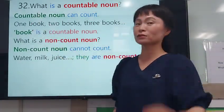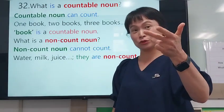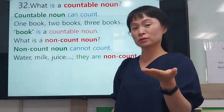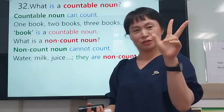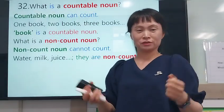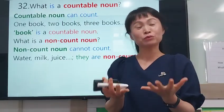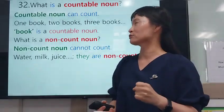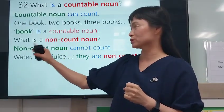Countable nouns can be counted — one, two, three, four. For example: one book, two book, three book, and so on. Book is a countable noun because we can count a book.